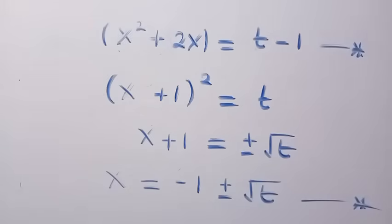Now we come back to the given function and replace the necessary things: we replace x squared plus 2x with t minus 1, and we replace x with minus 1 plus or minus the square root of t.